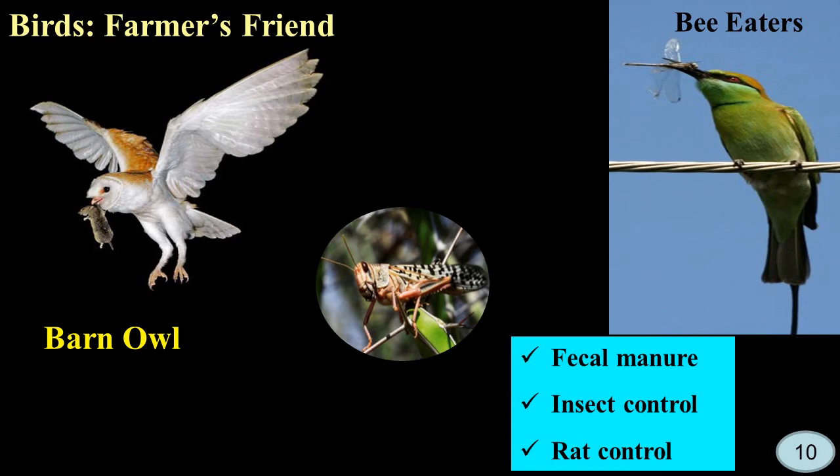Several birds are considered farmers' friends. For example, they can provide fecal manure to the farmers. Birds like the barn owl consume rodents, controlling the rat population. Birds like bee-eaters catch unwanted pests, so they also help the farmer.